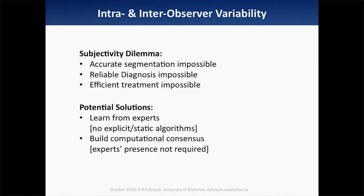The subjectivity dilemma — the nature of things, the limitations of imaging — makes accurate segmentation basically impossible algorithmically. We have to go with the experts, at least, because they disregard what the algorithms and software give them anyway. Reliable diagnosis is impossible, and efficient treatment is impossible if we cannot say where things are and cannot reach any consensus.